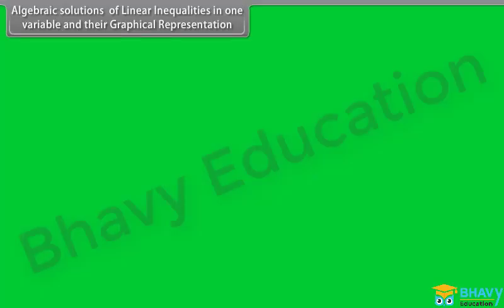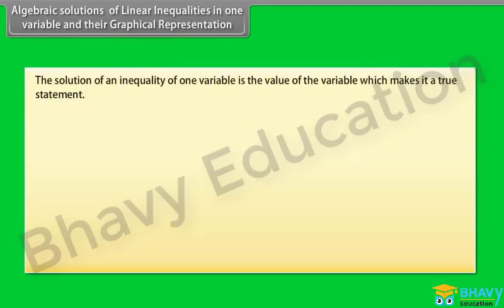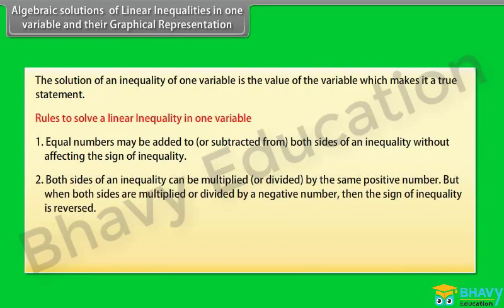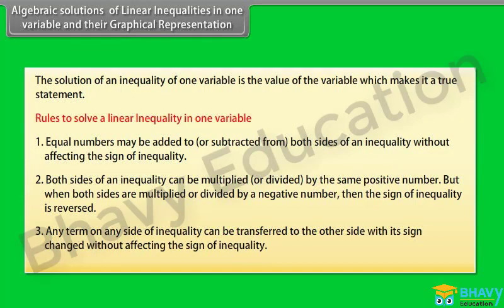Algebraic solution of linear inequalities in one variable and their graphical representation. The solution of an inequality of one variable is the value of the variable which makes it a true statement. Rules to solve a linear inequality in one variable: Rule 1 — equal numbers may be added to or subtracted from both sides of an inequality without affecting the sign of inequality. Rule 2 — both sides of an inequality can be multiplied or divided by the same positive number, but when both sides are multiplied or divided by a negative number, the sign of inequality is reversed. Rule 3 — any term on any side of inequality can be transferred to the other side with its sign changed without affecting the sign of inequality.